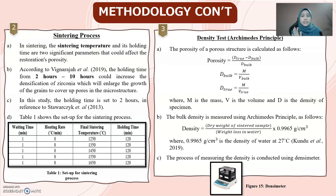The third step is the density test using Archimedes' principle. The porosity of a porous structure is calculated using the formula: porosity equals density-true minus density-bulk, divided by density-bulk. The bulk density is measured using Archimedes' principle, where density equals the dry weight of the sintered sample divided by weight loss in water, multiplied by 0.9965 g/cm³, which is the density of water at 27 degrees Celsius, with reference to Kundu. The density measurement process is conducted using a densimeter.